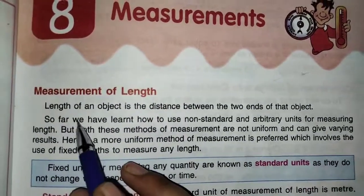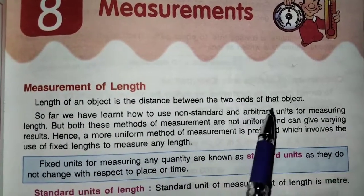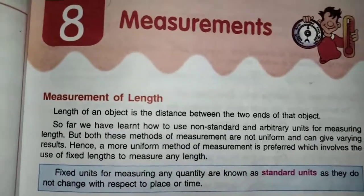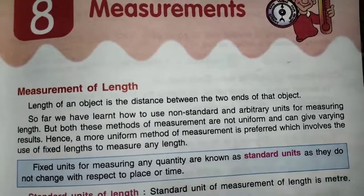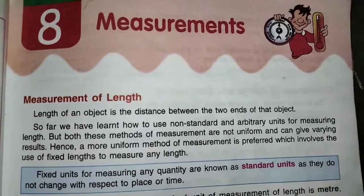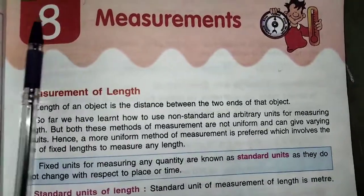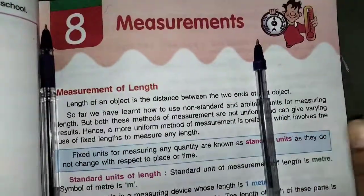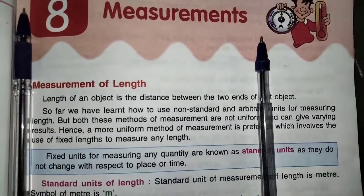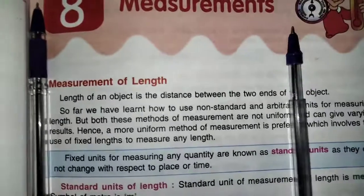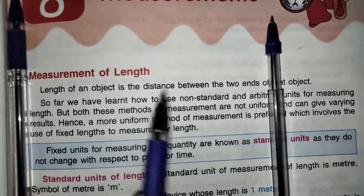Measurement of the length. The length of an object is the distance between the two ends of the object. Now, two objects are there — I will take this pen. This is one object and this is one object. The distance between these two pens is known as length.